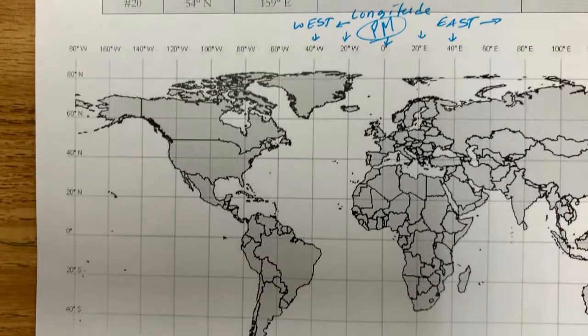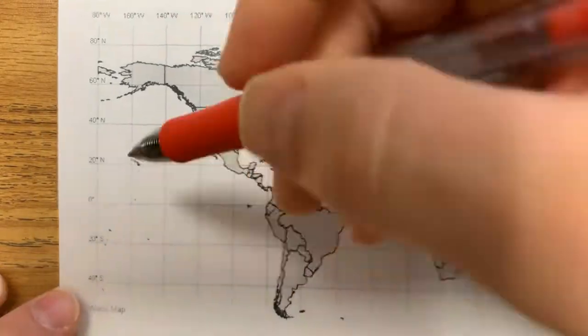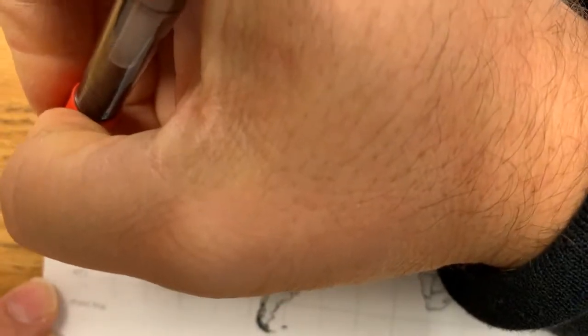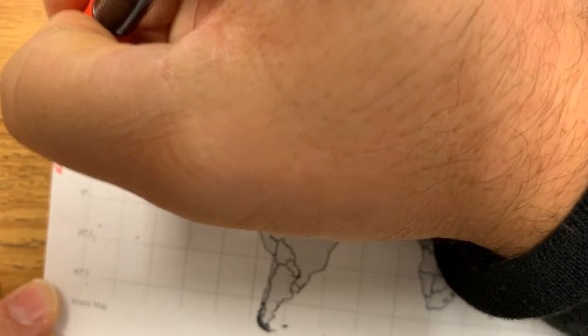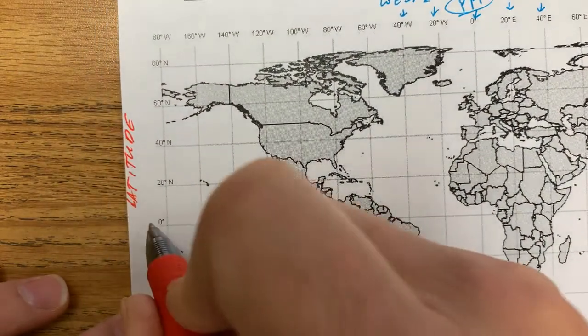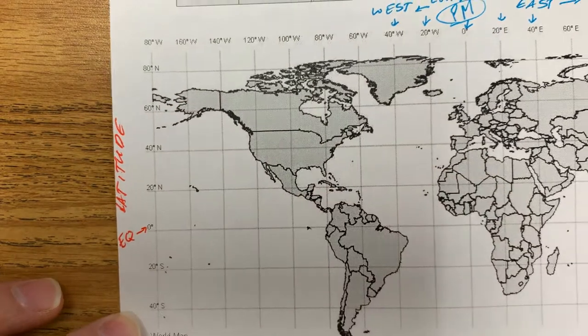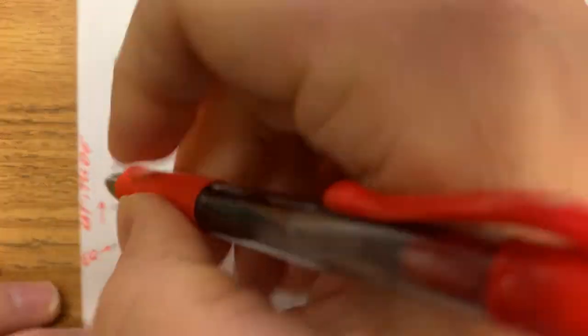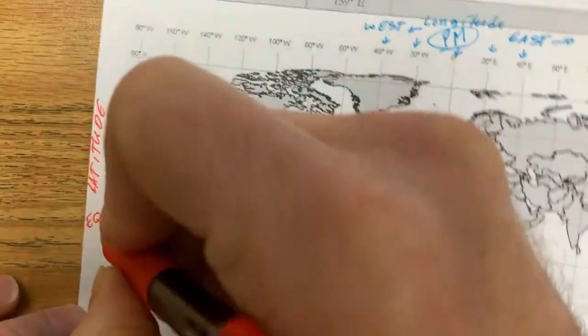Likewise, we have a latitude mark, and the latitude is over on this side. So these are the latitudes, and this mark right here is the equator. Anything above the equator is north latitude, and anything below the equator is south latitude.